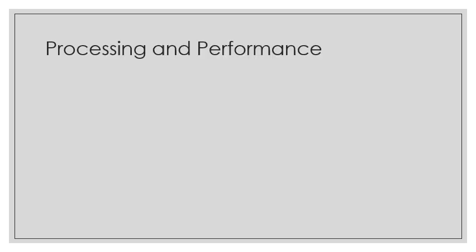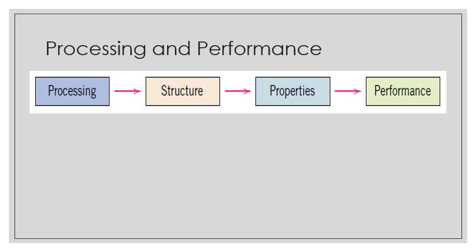In addition to structure and property, another two words that best define a material are processing and performance. With regard to the relationship of these four components: the structure of a material will depend on how it is processed, and the performance of a material is also a function of its properties. Through processing, madedetermine natin yung structure; through structure, madedetermine mo yung properties; and finally, from properties, malalaman mo yung performance ng isang material.